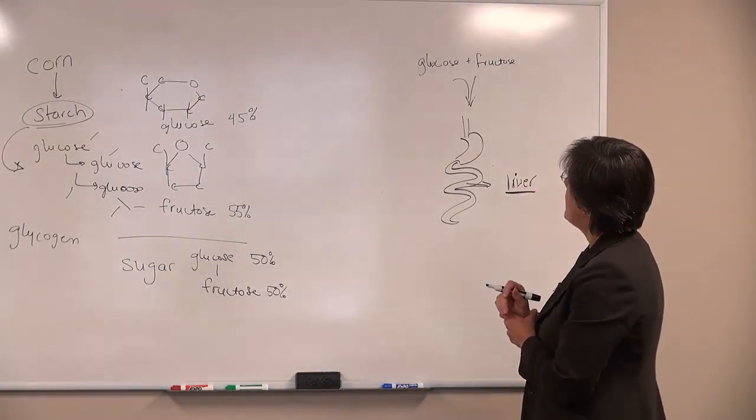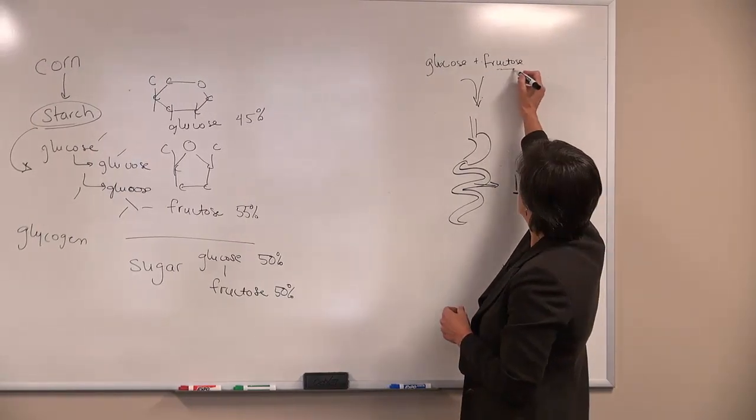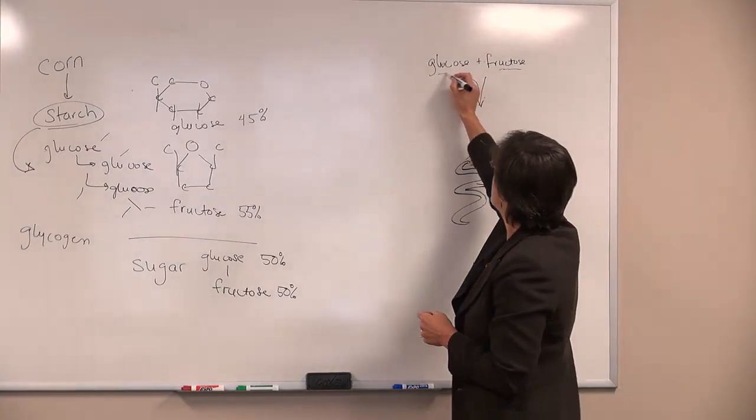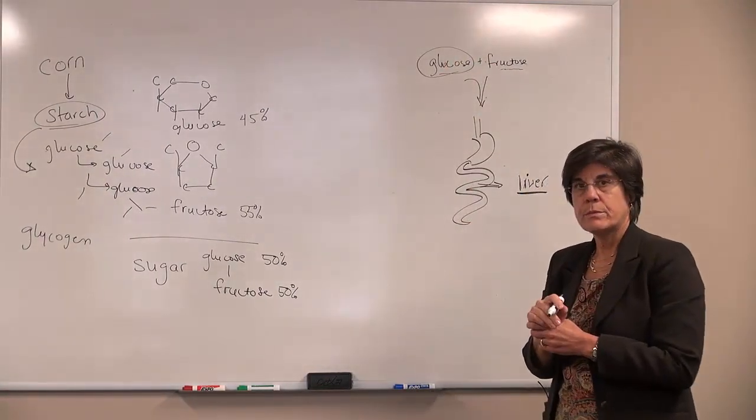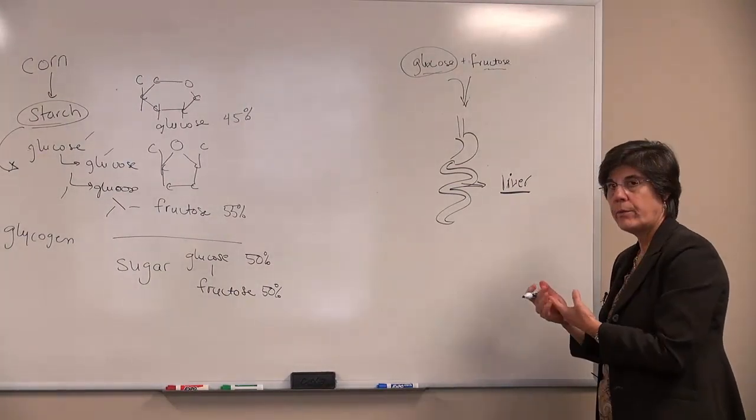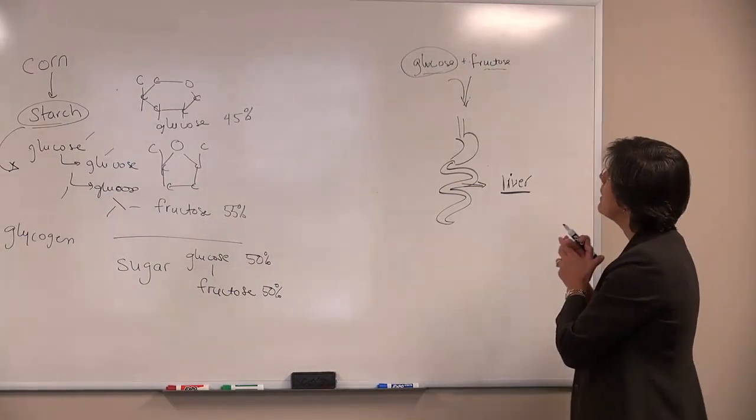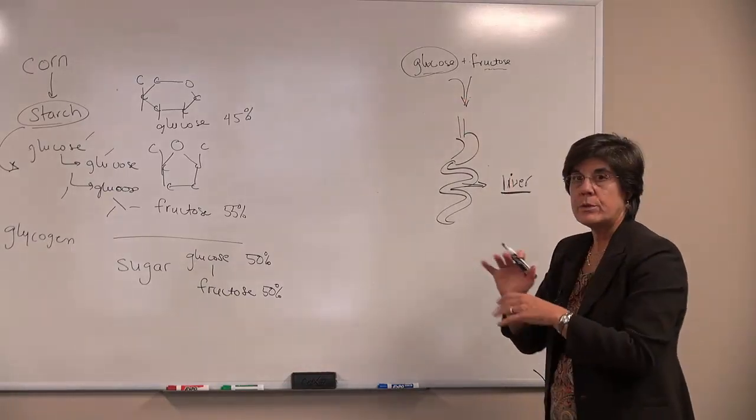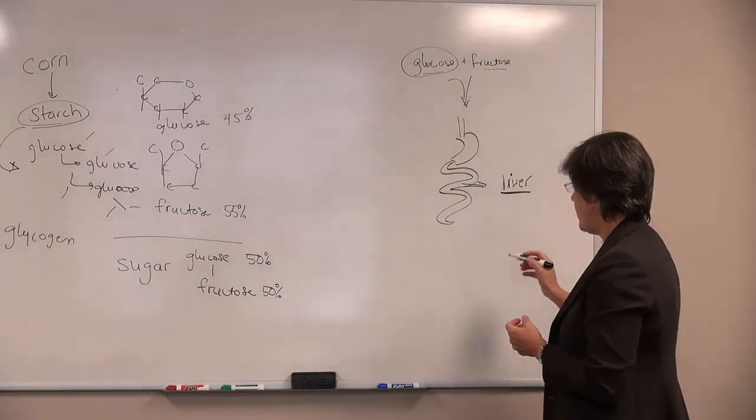In our body we don't have a real functional role for fructose. We do have a functional role for glucose. So there are systems in place when these molecules are absorbed from the intestine and they go to the liver - systems in place where you convert those into molecules that your body uses.